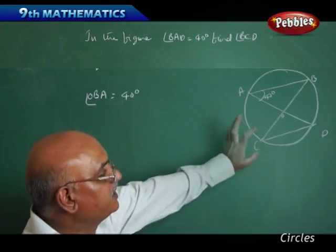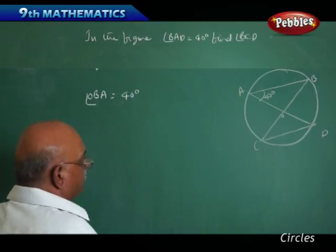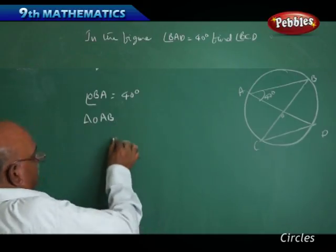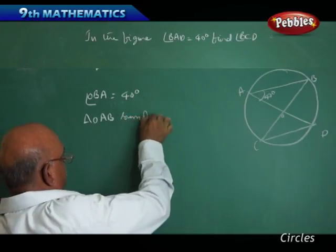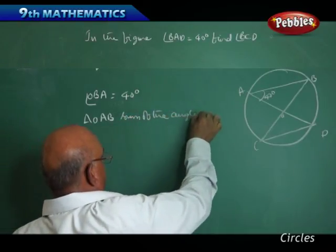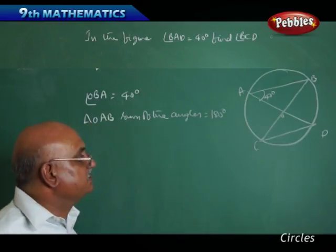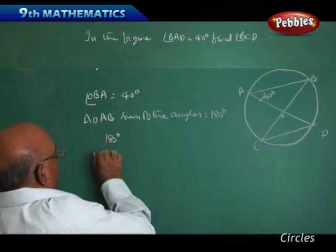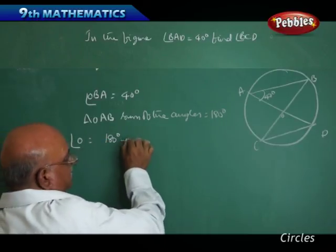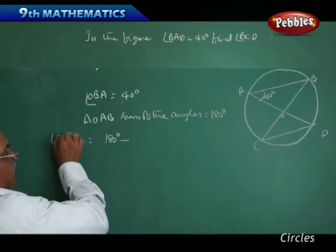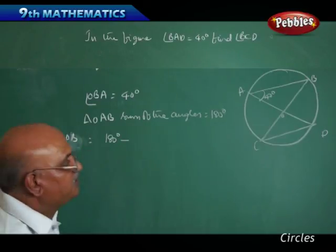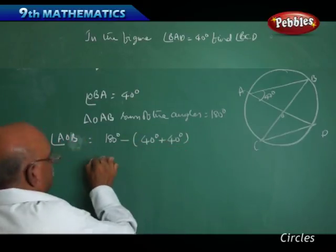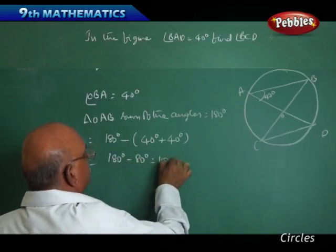Now, angles lying in the same segment: according to that, from triangle OAB, the sum of the angles is equal to 180 degrees. Angle AOB equals 180 degrees minus angle OAB plus angle OBA, that is 180 degrees minus 40 degrees plus 40 degrees, which equals 180 degrees minus 80 degrees, which is equal to 100 degrees.